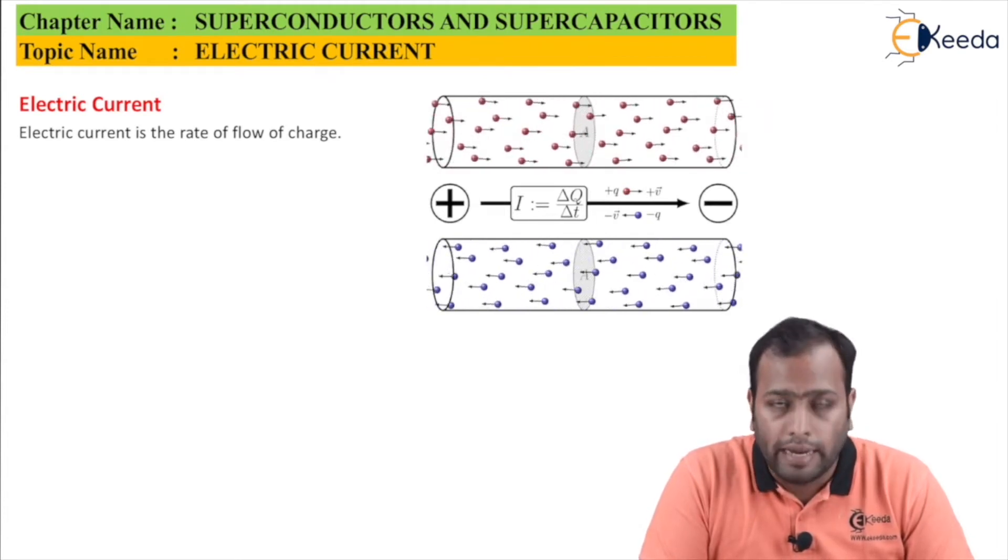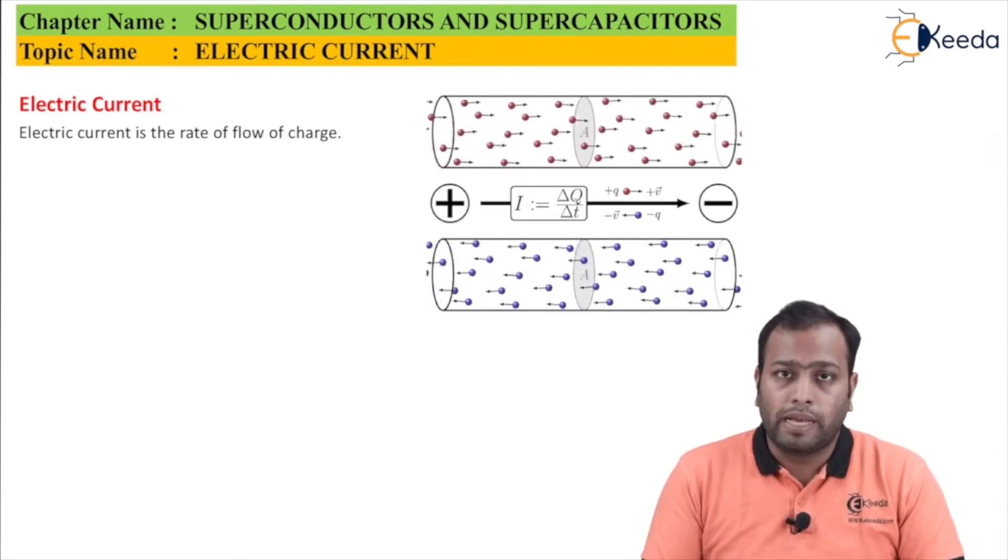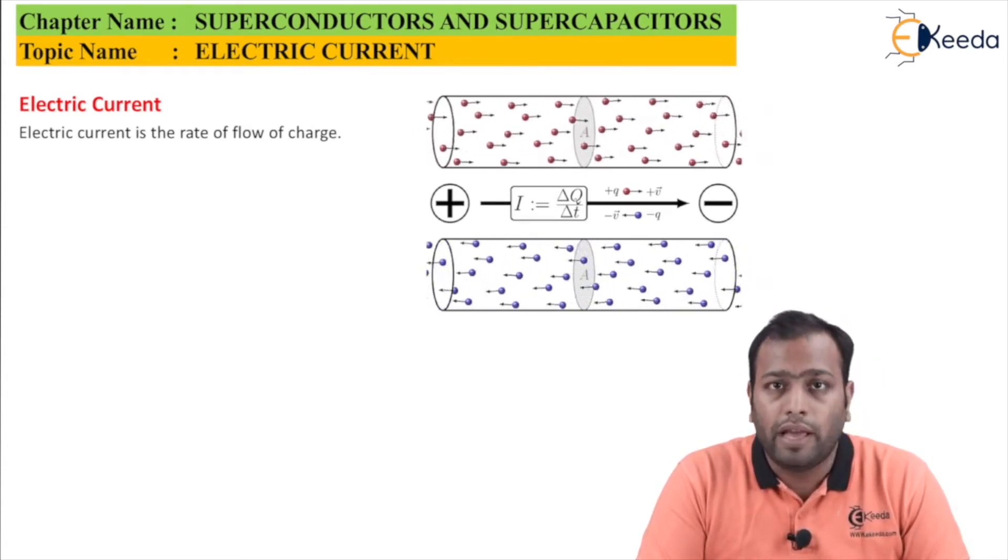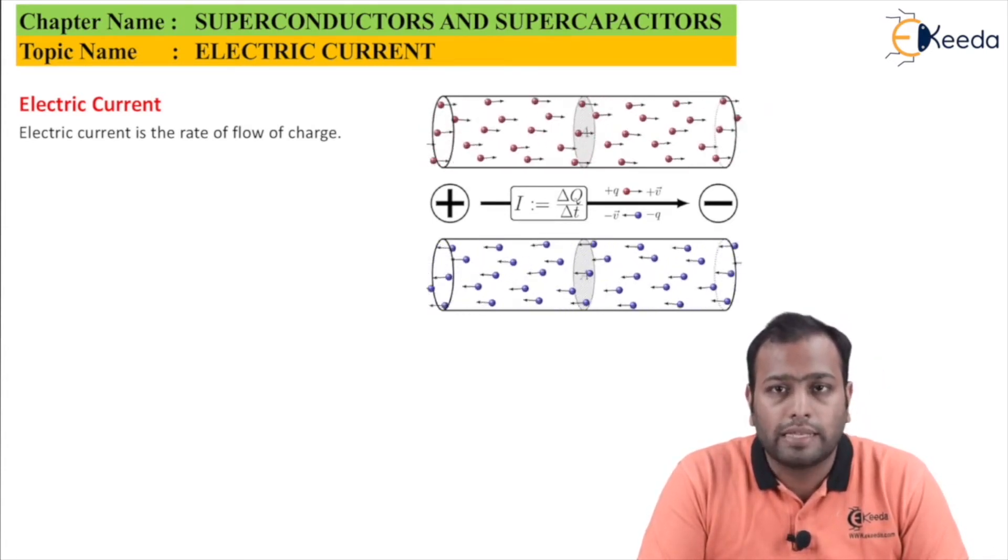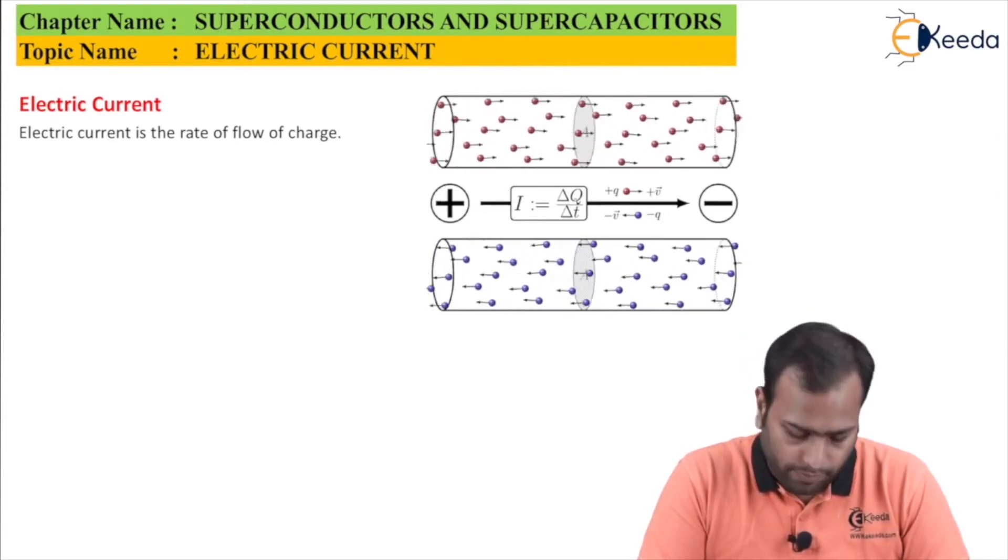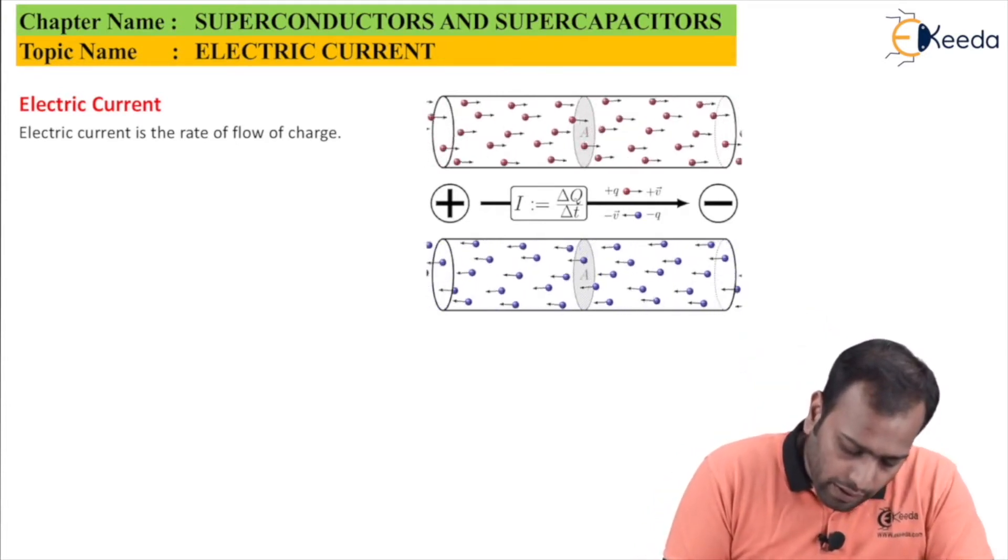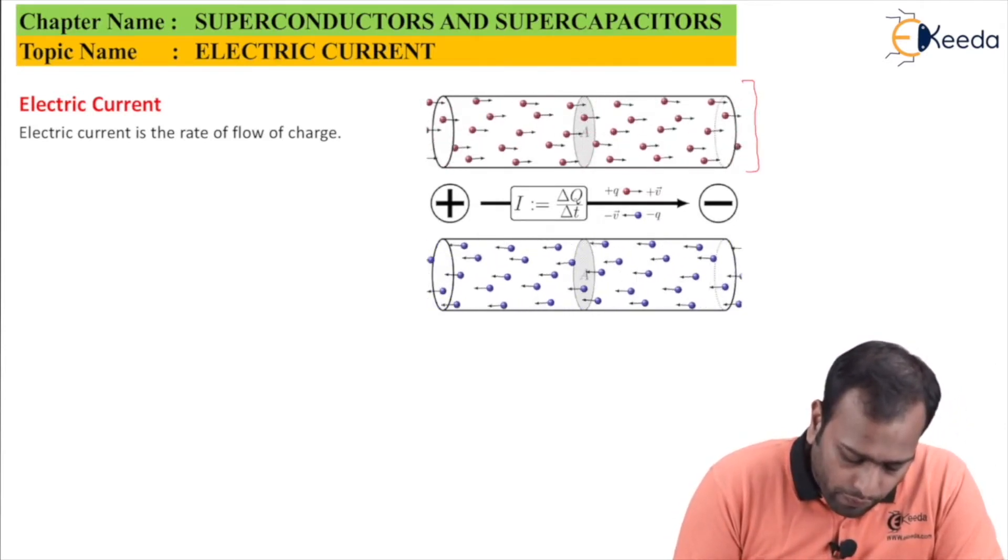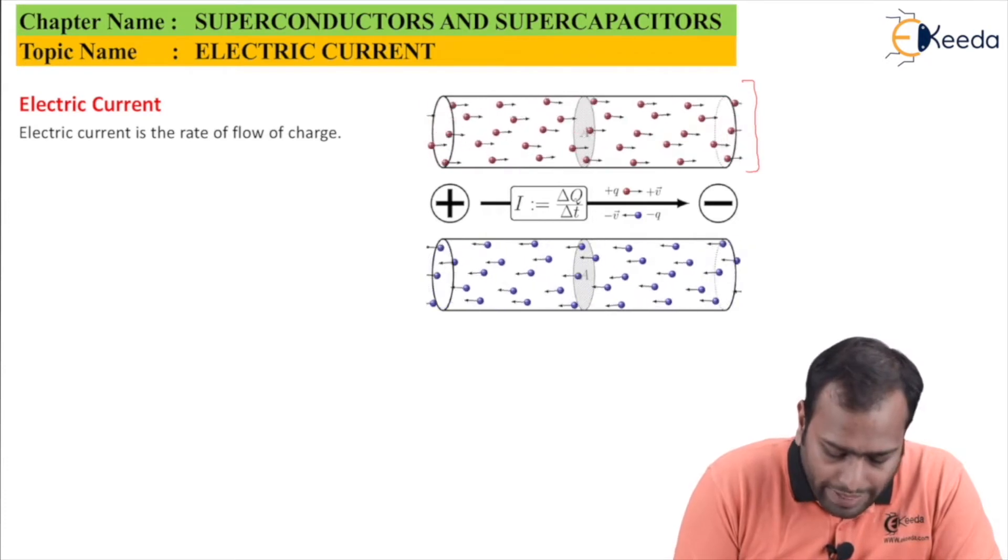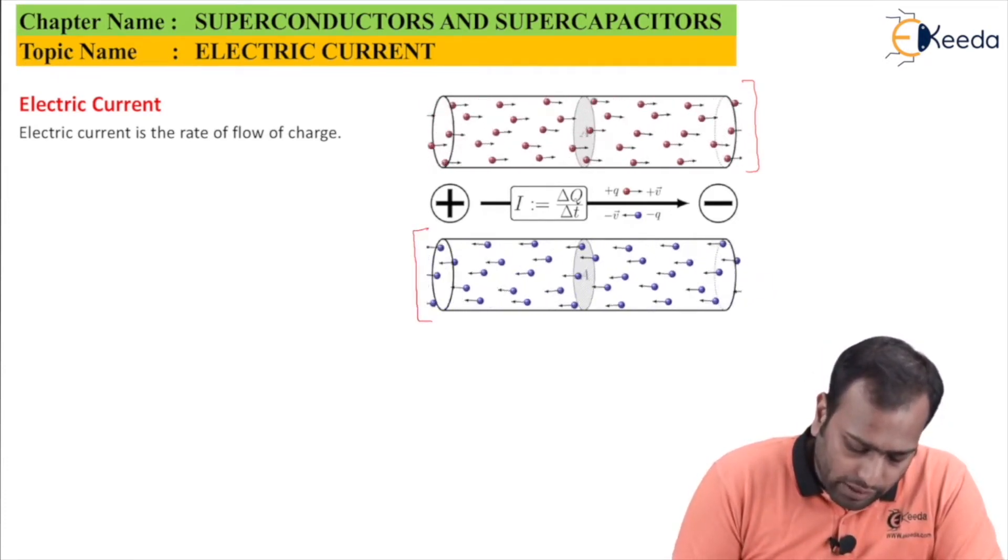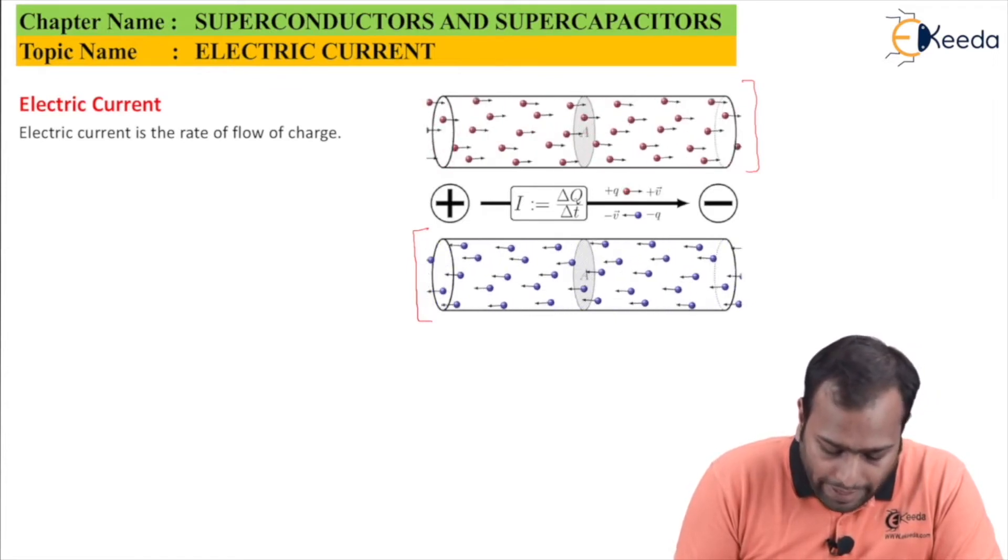We will be coming across various derivations wherein we have to take electrons as the carriers and holes as the carriers. As you can see, the positive charges are going from the positive side to the negative side, shown in red. The negative charges are going from the negative side to the positive side, shown in blue.